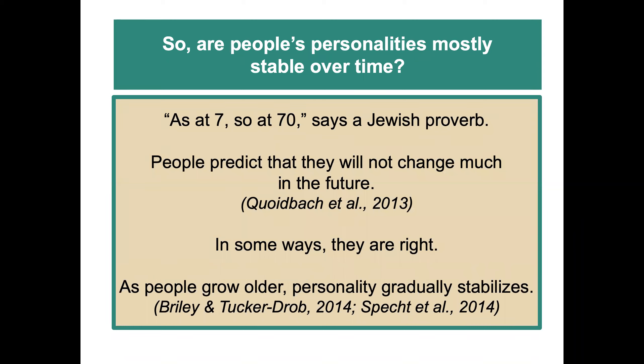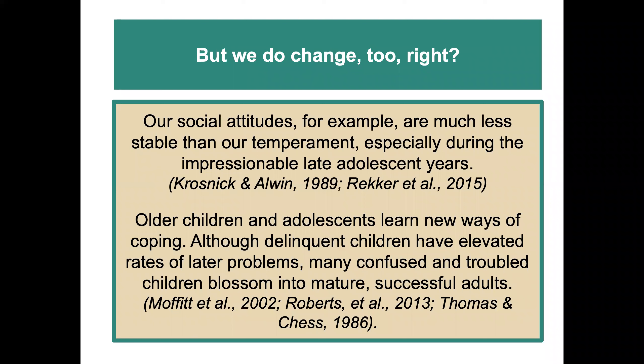Are people's personalities mostly stable over time? As a Jewish proverb says, people predict that they will not change much in the future, and in some ways that's right. As people grow older, personality seems to gradually stabilize. But we do change — our social attitudes, for example, are much less stable than our temperament, especially during those impressionable late adolescent years. Older children and adolescents learn new ways of coping, and although delinquent children have elevated rates of later problems, many confused and troubled children blossom into mature, successful adults.